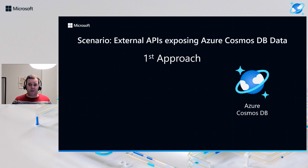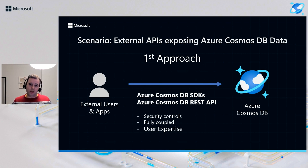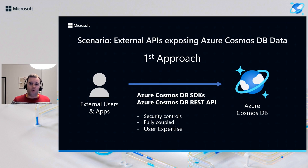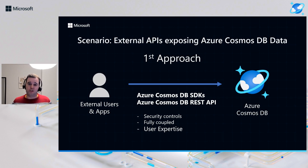The first approach: we have our Azure Cosmos DB instance and accounts, and we want to enable external users and apps to access our data. The first option you could consider is using the existing SDKs and the REST API for Azure Cosmos DB. However, this creates a tightly coupled architecture, requires your users and apps to have knowledge of Azure Cosmos DB, and you'd need to ensure security controls are in place to manage what those users and apps can do.